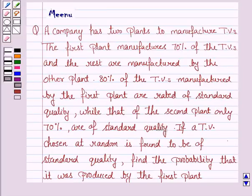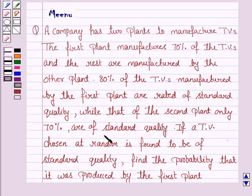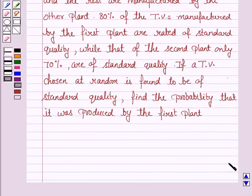Hello and welcome to the session. Let's work out the following problem. A company has two plants to manufacture TVs. The first plant manufactures 70% of the TVs and the rest are manufactured by the other plant. 80% of the TVs manufactured by the first plant are rated of standard quality, while for the second plant only 70% are of standard quality. If a TV chosen at random is found to be of standard quality, find the probability that it was produced by the first plant.